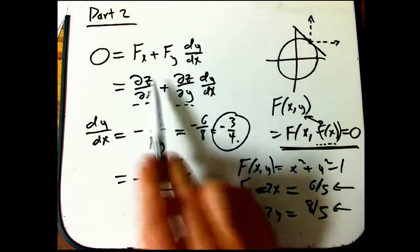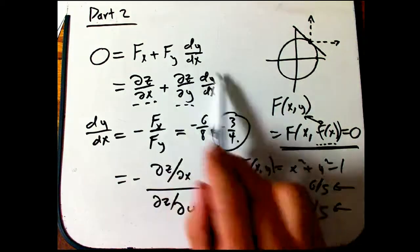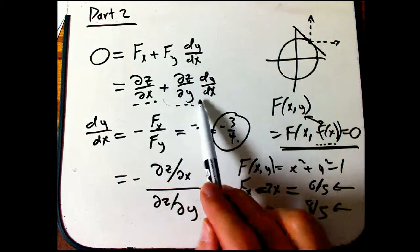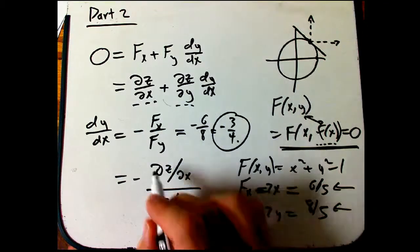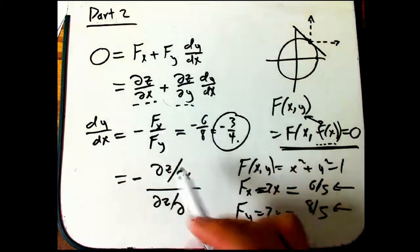Here's the contribution we're going to get by changing x. Here's the indirect contribution we get by changing y. We want them to cancel out to be zero, because this is a level set. Now, one interesting thing about that cancellation is...